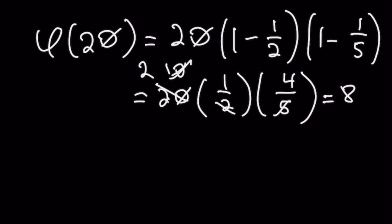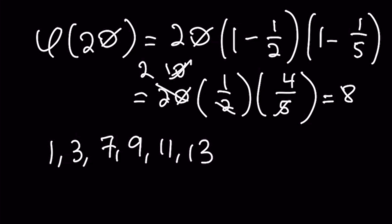To produce a reduced residue system mod 20 we're going to need 8 entries, and we do that by taking all numbers relatively prime to 20 from 1 to 20 — all numbers that do not contain factors of 2 or 5. So that's going to be: 1, 3, 7, 9, 11, 13, 17, and 19. That is one example of a reduced residue system mod 20.